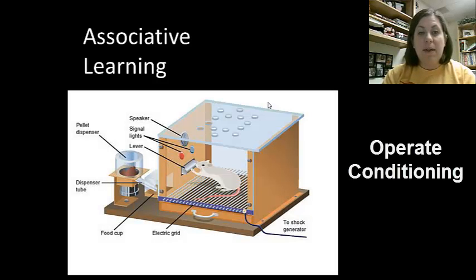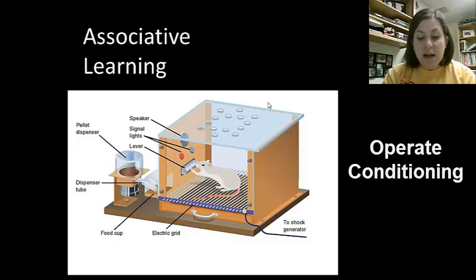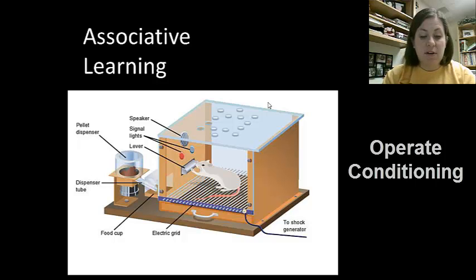Operant conditioning was studied by B.F. Skinner. He placed a rat in a cage with a lever, and when the rat happened to press the lever, it would be rewarded with a sugar pellet. This is when behavior is strengthened by rewards or punishments. We use this type of learning to teach our pets tricks and also to raise children. If the rat pressed the lever at the wrong time, there was an electrical grid that would shock it as a negative response. Skinner wasn't just about rewards — he also looked at how negative reinforcement worked with this type of behavior.